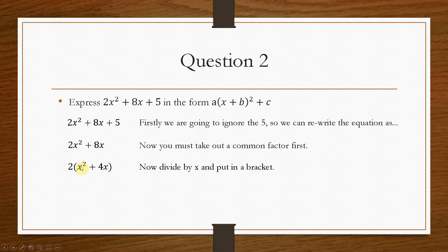So we divide by x, we remove an x from each of the terms, and we pop in a bracket, and then we half this value, and we square the bracket.